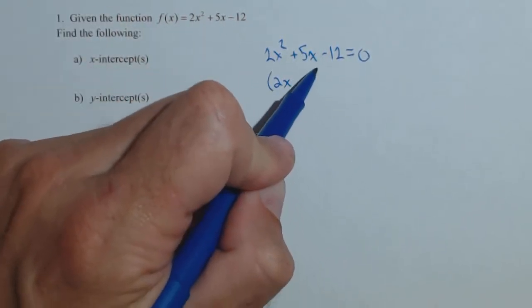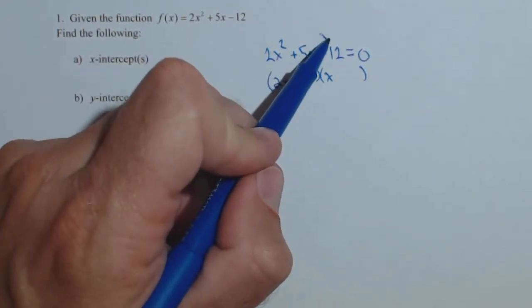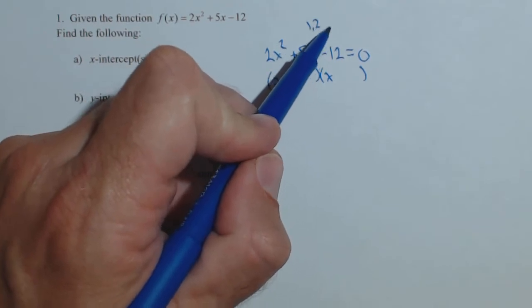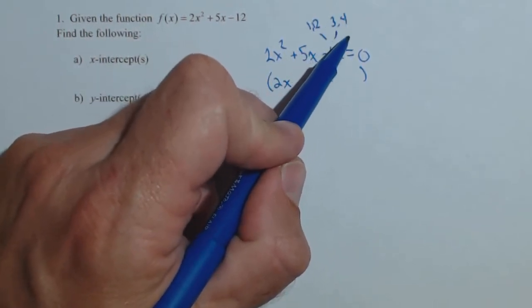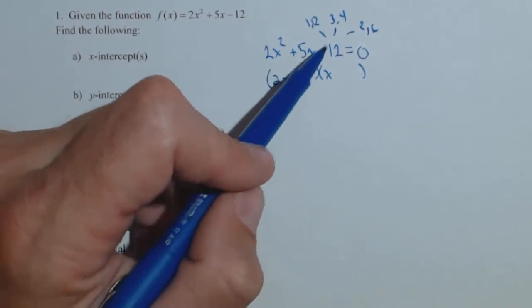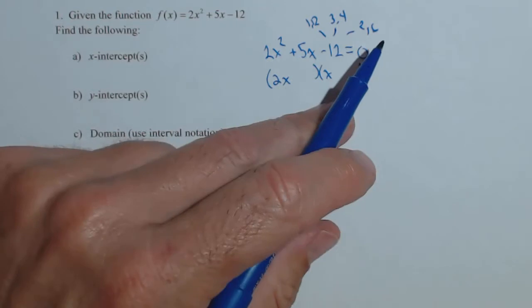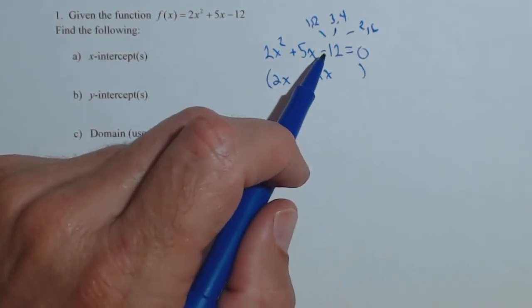I know it's going to have to be 2x and x. Now I think about my factors of 12. I've got 1 and 12, 3 and 4, and 2 and 6. It's got to be one pair of those, and then their product slash difference needs to come out to be 5. Difference, because these are going to have opposite signs.